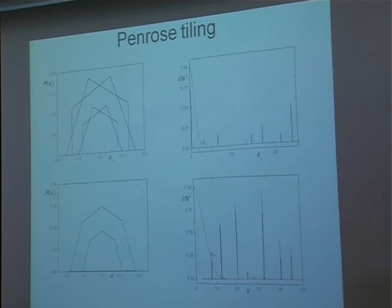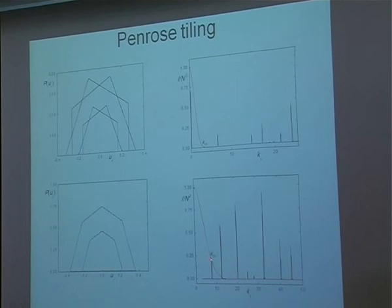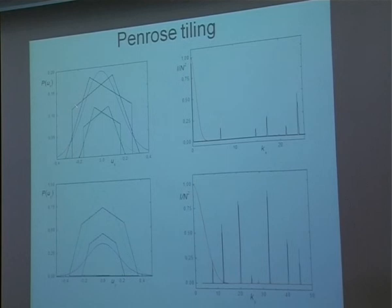If we calculate the same distribution along the y direction with the K vector given by that value, you can still see there is almost nothing. But these two vectors are enough to reconstruct the whole diffraction pattern. What is even more important: if you don't know this distribution — this complicated shape — you can simply calculate an approximation by a Gaussian function. If you fit a Gaussian function to this distribution, it's enough to reconstruct the diffraction pattern, because the diffraction pattern mostly depends on phases, not on the amplitudes. So the amplitude can be described by a Gaussian approximation, and then we know the phases correctly.